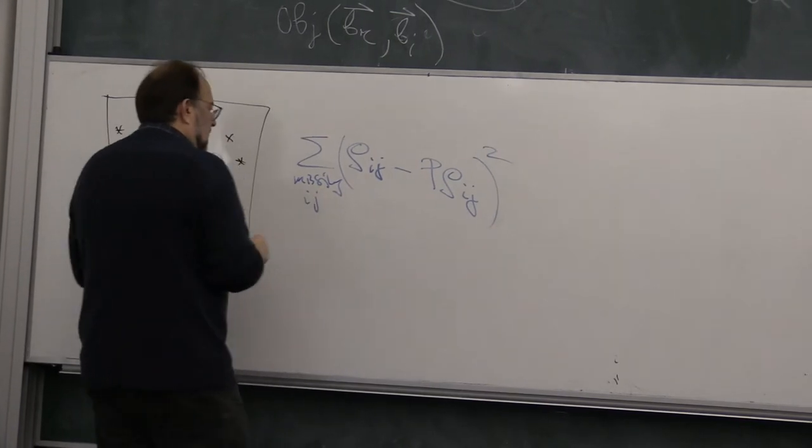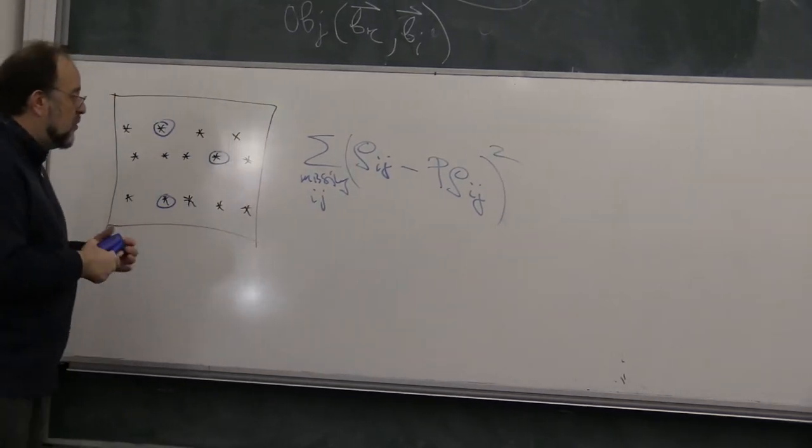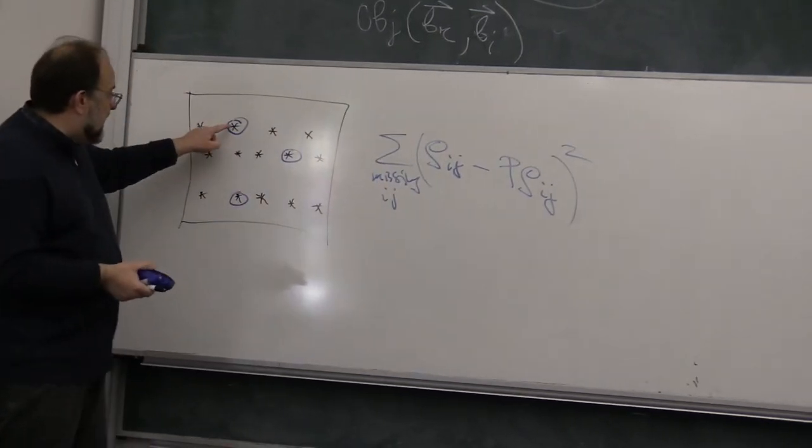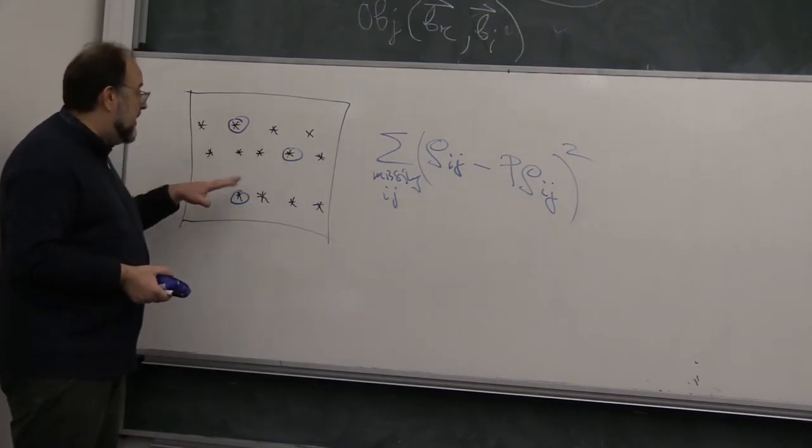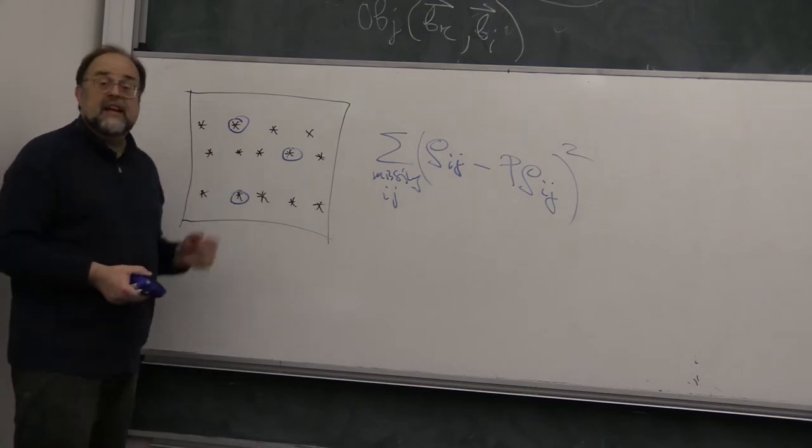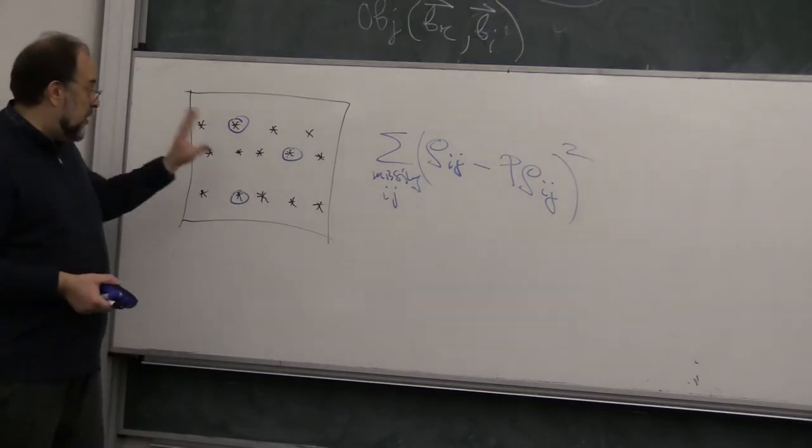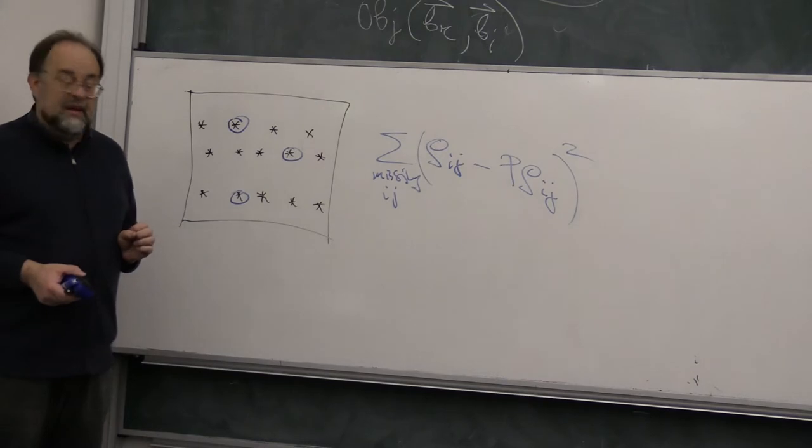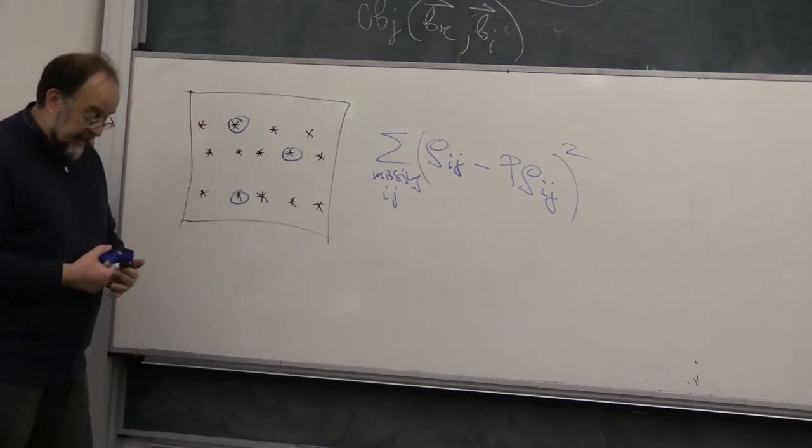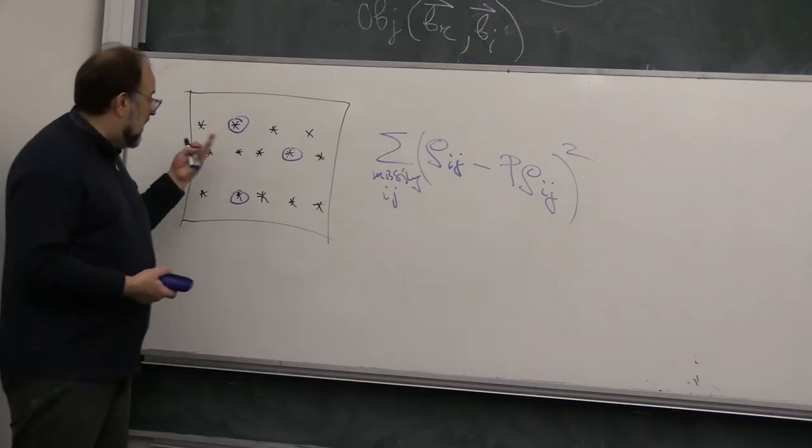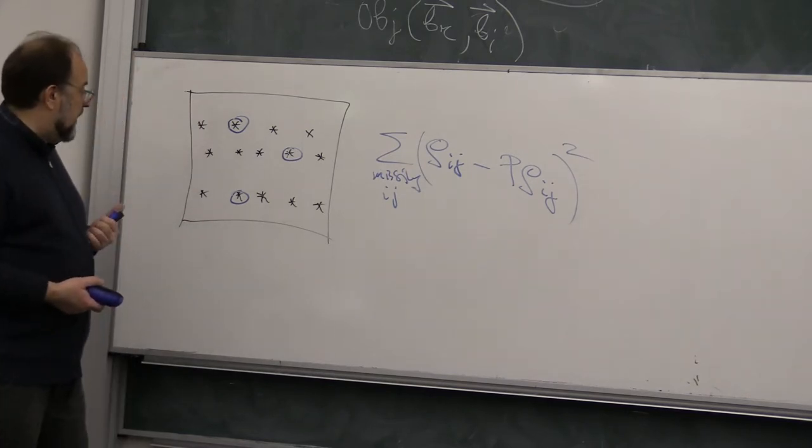Between rho_ij minus predicted rho_ij square over missing i,j. So, right? So, this is the Euclidean distance between what the algorithm guess should stand here, here, and here, right? And what the really real values obtained from the users were.